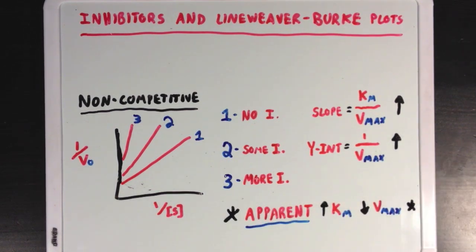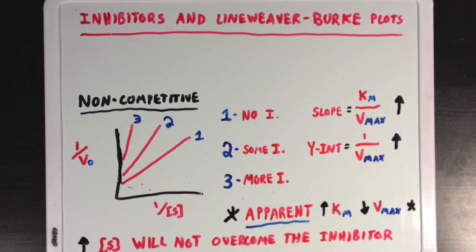So in this case, high substrate concentrations won't completely overcome this type of inhibitor, since it lowers Vmax. But, since there's an increase in the Km as well, the enzyme will also be inhibited at low substrate concentrations.